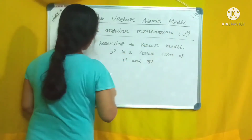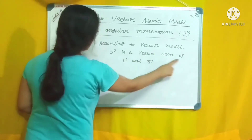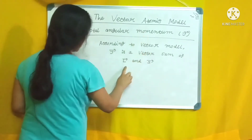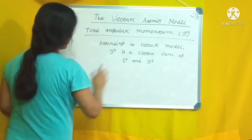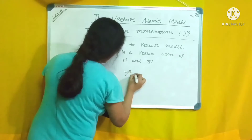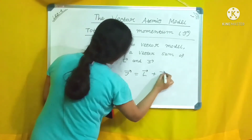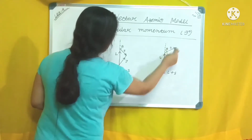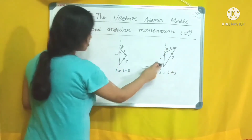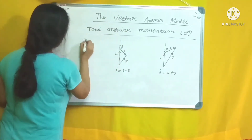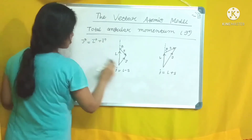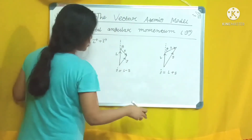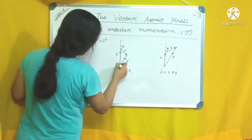The total angular momentum J, according to the vector model, is the vector sum of L and S: J = L + S. According to the vector atomic model, L and S are both quantized vectors, so J is also a quantized vector. We can add L and S in parallel or anti-parallel directions.